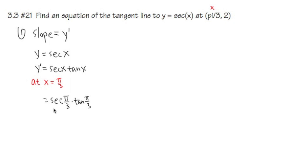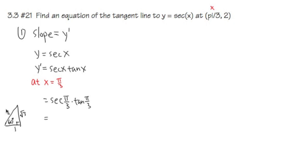Let's work this out. How do we find the value of secant(π/3)? Let's draw a triangle. Pi over 3 is 60 degrees, so my triangle is the 30-60-90 special triangle. This angle is 60 degrees, which is the same as pi over 3. The ratio of the sides are square root of 3, 1, and 2. Secant means hypotenuse over adjacent, so secant(π/3) is 2 over 1.